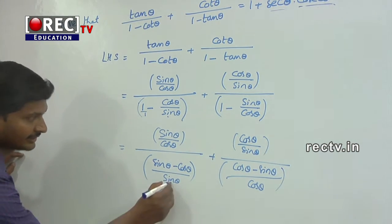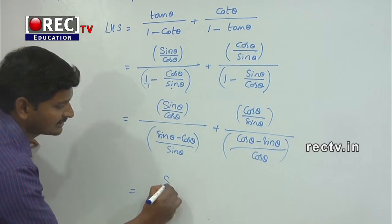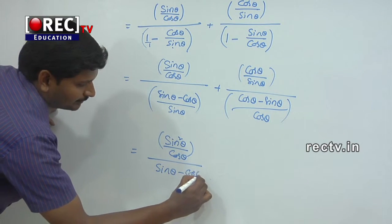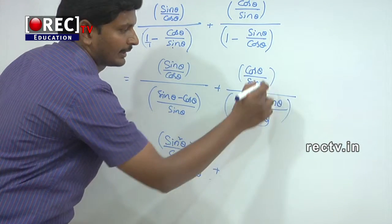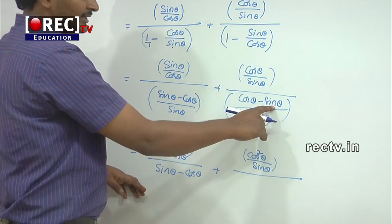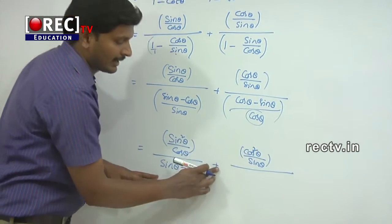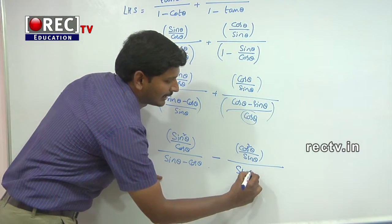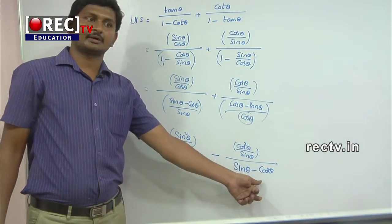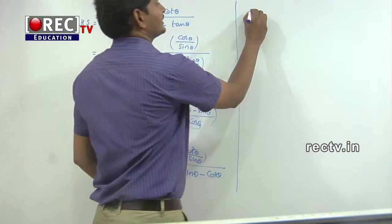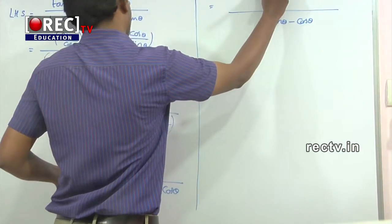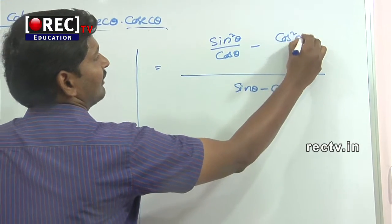After simplification, sine θ goes to the numerator. So we get sine θ into sine θ over cos θ. Here sin θ minus cos θ appears in the denominator of both terms, so the denominator is the same for both. The numerator is sin² θ over cos θ minus cos θ over sin θ.